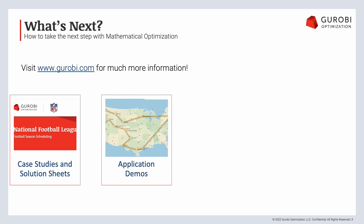After that, we have application demos — visual, web-based tools that display the types of problems that mathematical optimization can solve. Some of these are more traditional operations research problems, but they definitely still have a lot to show. One of our application demos is the traveling salesman problem, which is a very well-known OR problem, and you can check out that demo and a bunch of others as well.